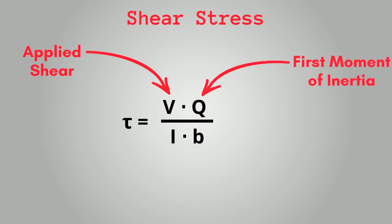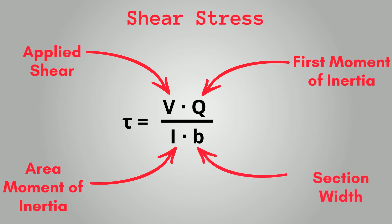The shear stress, tau, is defined by this equation. Where V is the applied shear force, Q is the first moment of inertia, I is the area moment of inertia, and B is the width of the section.